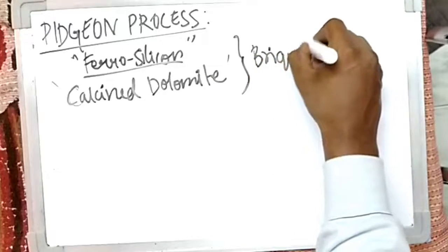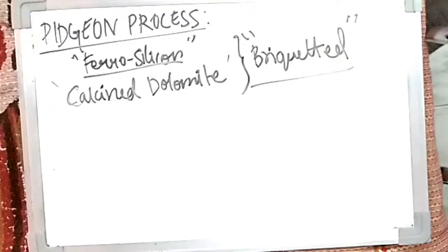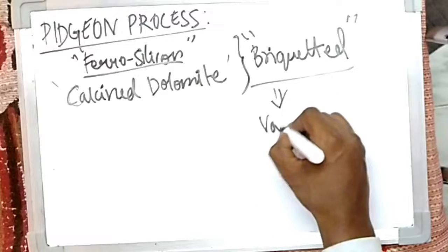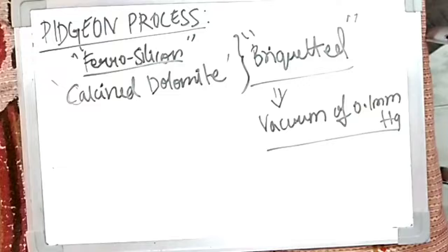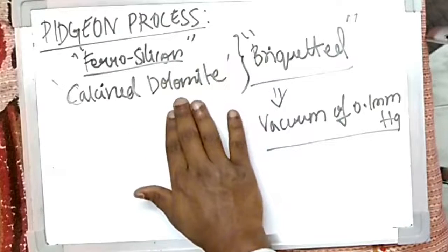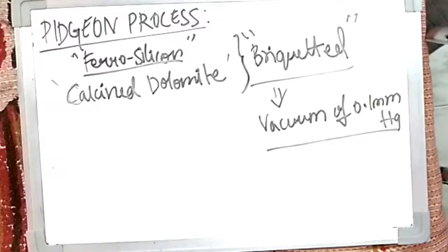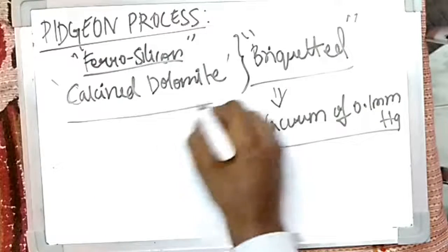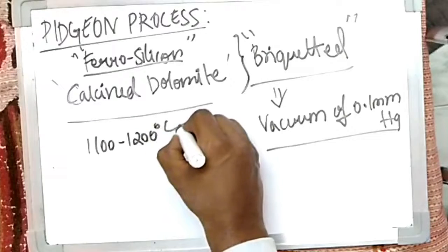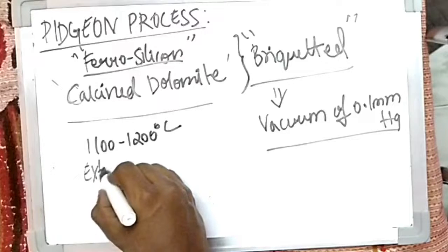The calcined dolomite along with powdered ferrosilicon is briquetted — meaning compressed together — under a vacuum of about 0.1 mmHg, which is essentially near-zero pressure. Under this vacuum, the powdered ferrosilicon is briquetted together with the calcined dolomite. The process is carried out at a temperature of about 1100 to 1200°C in an externally heated retort.